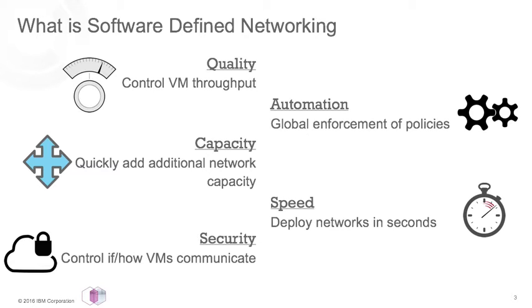SDN has five key focus areas. The first is quality: being able to control throughput of the workload. Next is automation — as you scale to several thousand virtual machines, you need policy-based management and the ability to apply those rules quickly across a large set of VMs. Next up is capacity: having the ability to add additional capacity to remove bottlenecks as your virtual networks fill up and get used more. The fourth focus area is speed: being able to put new rules and policies into place in seconds and have those rules applied immediately.